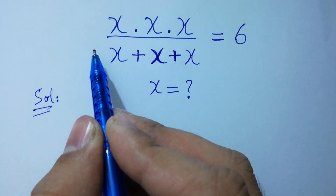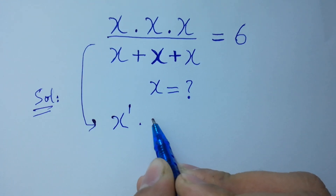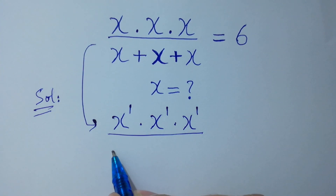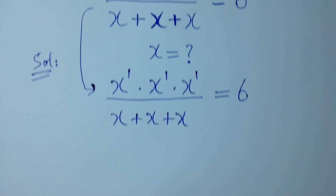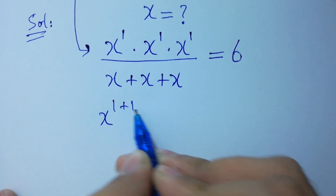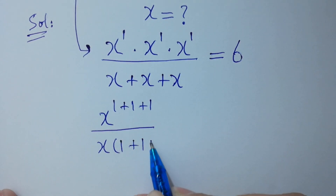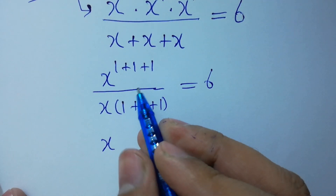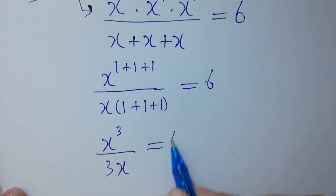In fact, this is x to the power 1 times x to the power 1 times x to the power 1 over x plus x plus x, equal to 6. Since the base is the same, we add the powers: x to the power 1 plus 1 plus 1, over x common, giving 1 plus 1 plus 1, equal to 6.